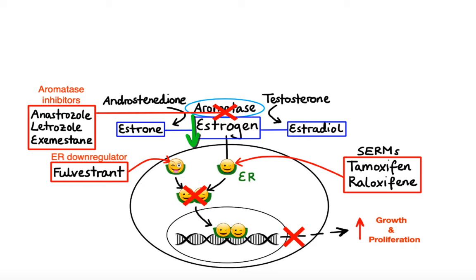The last approach to reduce estrogen levels is to suppress the ovaries, which are the main source of estrogen particularly in premenopausal women. The ovaries produce and secrete estrogens in response to follicle-stimulating hormone and luteinizing hormone, which are released from the pituitary gland when signaled by the hypothalamus. To carry its message, the hypothalamus produces a chemical signal in the form of gonadotropin-releasing hormone (GnRH), which exerts its stimulatory effects by activating GnRH receptors expressed on the pituitary gland. These receptors are the target of GnRH agonists, such as leuprolide, goserelin, and triptorelin, which work by overstimulating GnRH receptors, resulting in receptor desensitization over time, leading to reduced secretion of luteinizing hormone and follicle-stimulating hormone, and ultimately reduced production of estrogen.